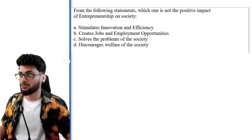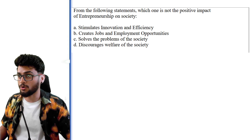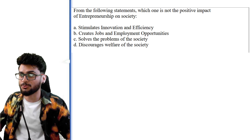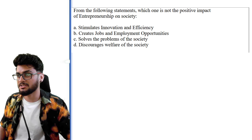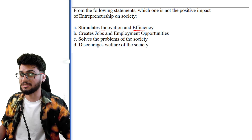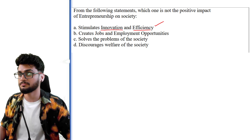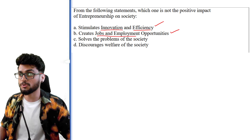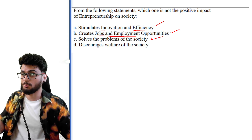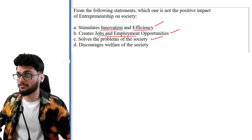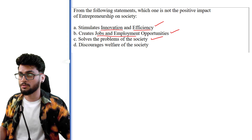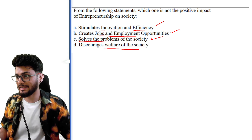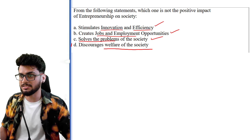'From the following statements, which one is not a positive impact of entrepreneurship on society?' Stimulates innovation and efficiency — positive impact, right statement. Creates jobs and employment opportunities — yes, right statement. Solves the problems of society — entrepreneurship also solves consumer problems, right statement. 'Discourages welfare of society' — that means not letting society improve, which is a wrong statement. Hence this is the correct answer.